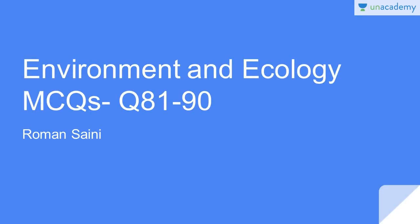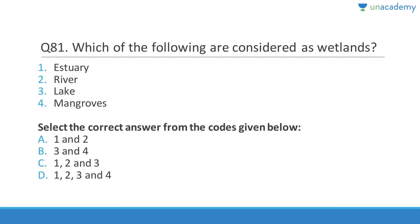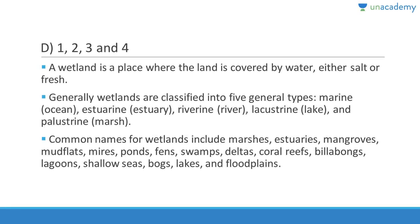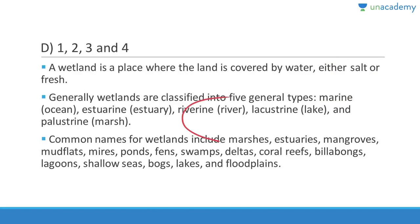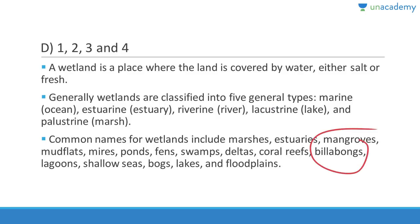Questions 81 to 90. Question 81: Which of the following are considered as wetlands — estuary, river, lake, mangroves? All are examples of wetlands. A wetland is a place where land is covered by water, usually saturated, either salt or fresh. Types include marine (ocean), estuarine (estuary), riverine (river), lacustrine (lake), and palustrine (marsh). Common names include marshes, estuaries, mangroves, mud flats, ponds, swamps, deltas, coral reefs, and flood plains.